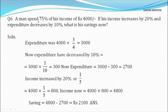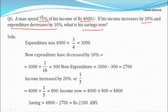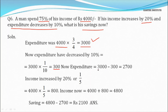Question 6: A man spends 75% of his income of ₹4,000. His income increases by 20% and his expenses decrease by 10%. What are his savings now? Currently, expenses = 4,000 × 75% = 4,000 × 3/4 = ₹3,000. With a 10% decrease in expenses: 10% of 3,000 = 1/10 × 3,000 = 300. New expenses = 3,000 − 300 = ₹2,700.